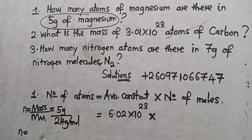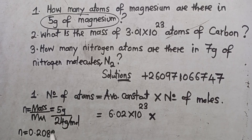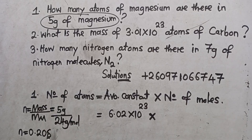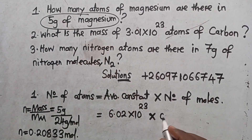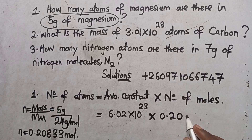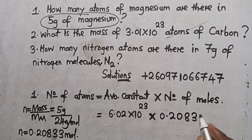So the number of moles is equal to 5 divided by 24. You get your calculator and divide. The answer you are going to get is 0.2083 recurring. So these are the number of moles for magnesium having that mass. It's the one that I'm going to put here: 0.2083 repeating.